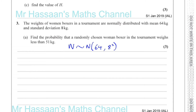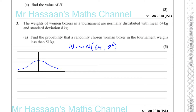Let me draw the bell curve. Try to make it symmetrical — the median, the mean, and the mode all sit in the same place, right in the middle of this distribution. This is a normal distribution, which is symmetrical. The mean is 64 and the standard deviation is 8.